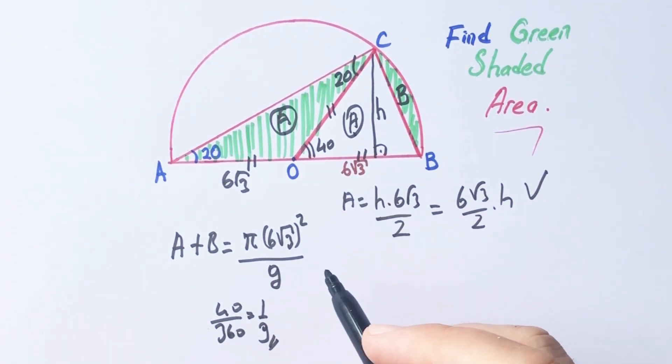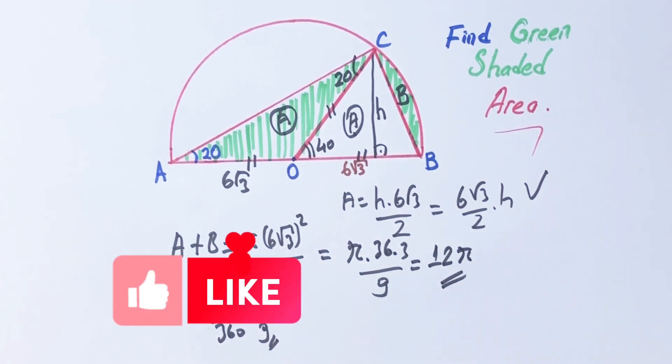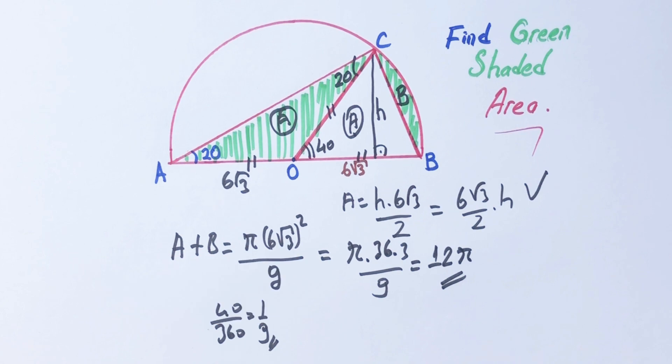So, A plus B equals pi times 36 times 3 over 9. Thanks.